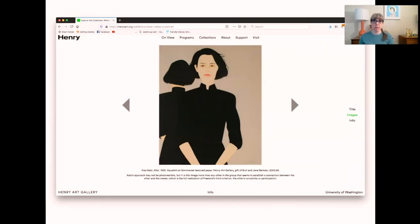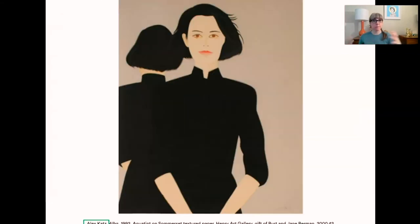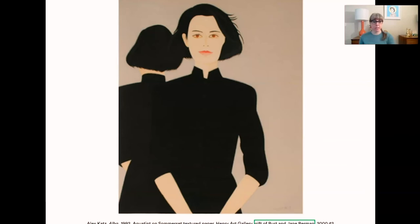Here is a bit from an online exhibition we've had up. We've got these works of art and almost all the same information that was on the labels. We've got the artist. This time we don't have where the artist is from or when they lived. We've got the title - this piece of art is called Alba. It was made in 1992. It is an aquatint on Somerset textured paper, which is a technical description, but it's the way we say that it's a print. It's owned by the Henry Art Gallery, and it was a gift of Bert and Jane Berman. This means it came to us in the year 2000, and it was the 42nd thing acquired that year.